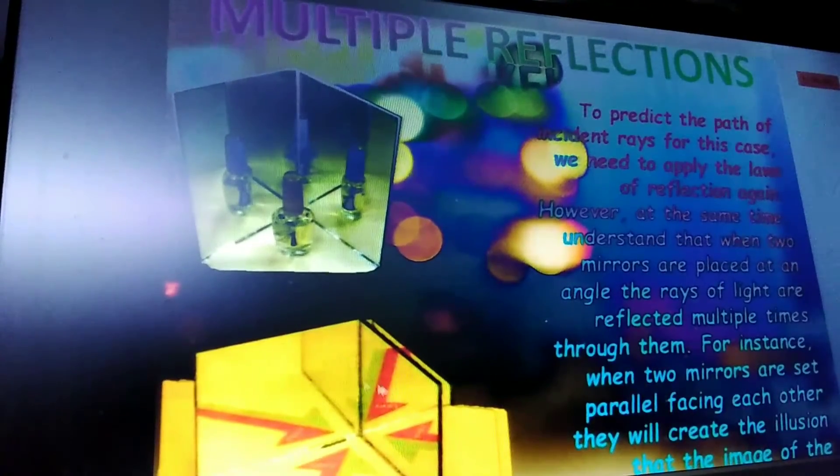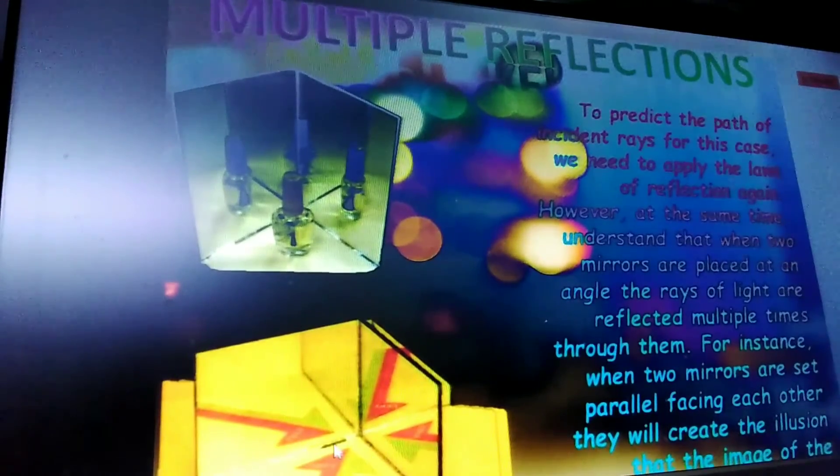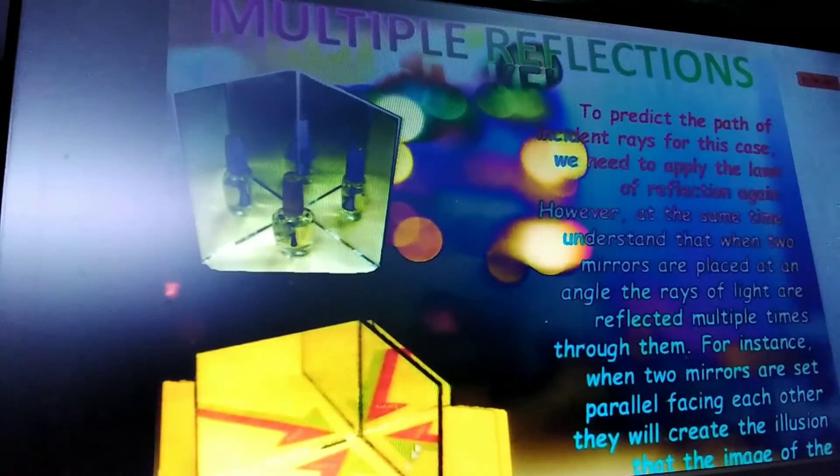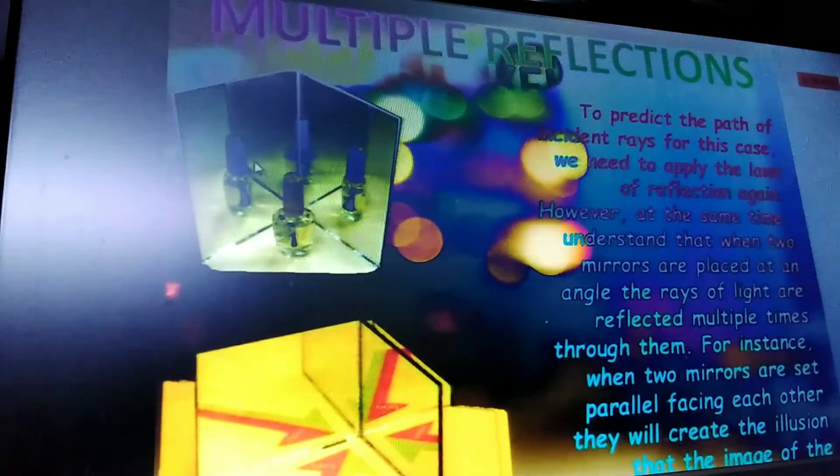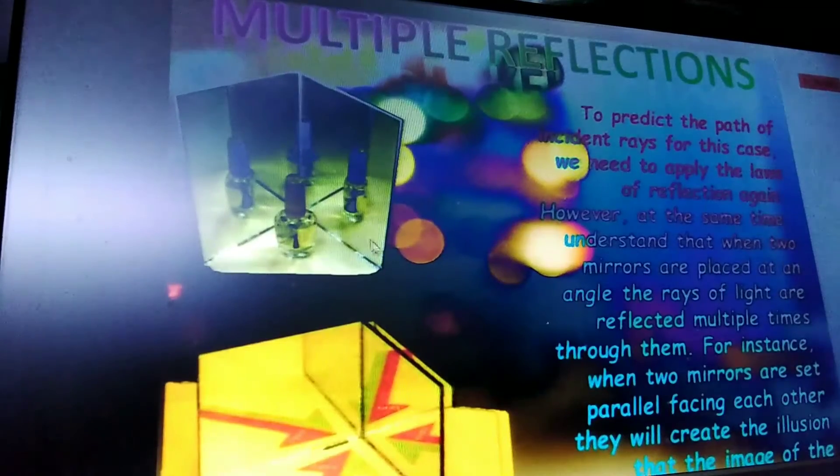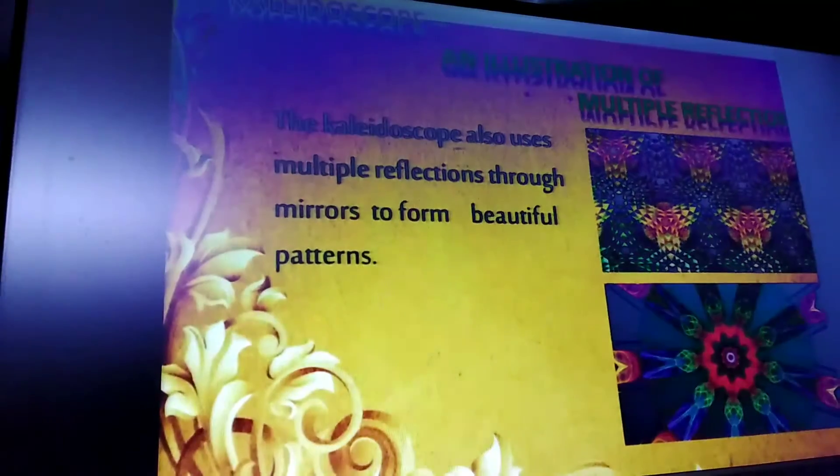With an angle of 60 degrees between the two mirrors, three images of the arrow are formed. Similarly, with other angles, multiple bottle images will be seen.